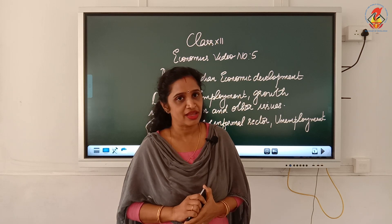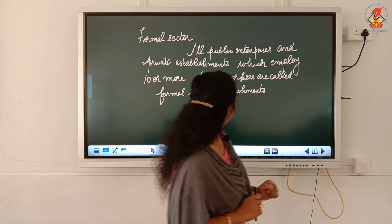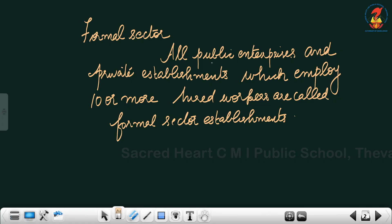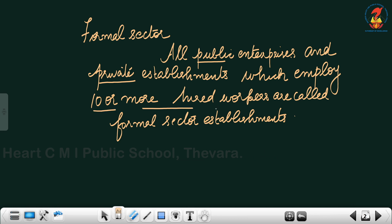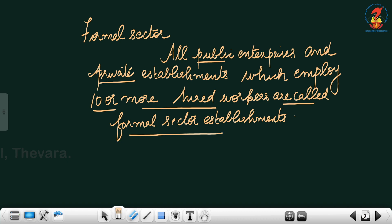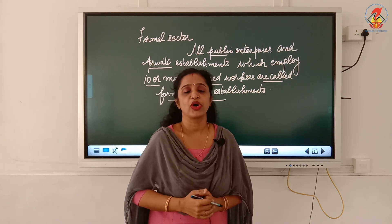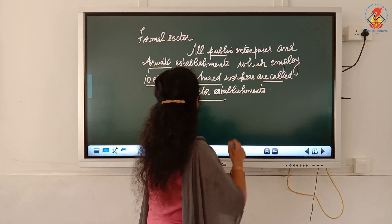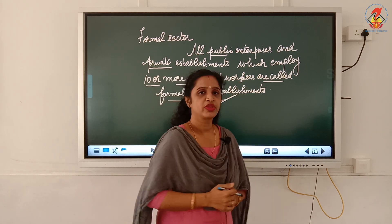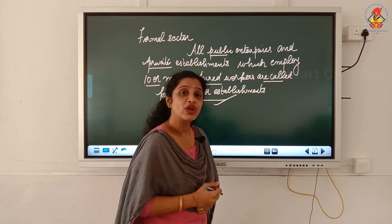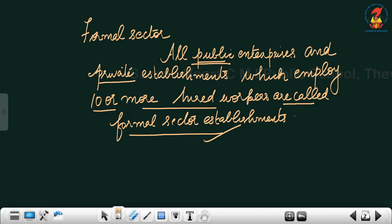What is meant by a formal sector? All public enterprises and private establishments which employ 10 or more hired workers are called formal sector establishments. Any private or public enterprise which has 10 or more employees is known as a formal sector establishment, also called the organized sector of employment.